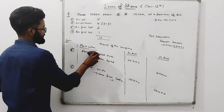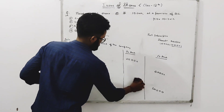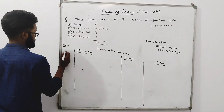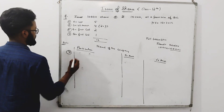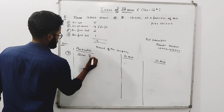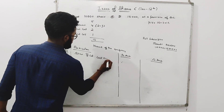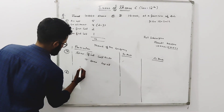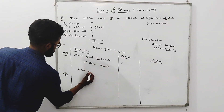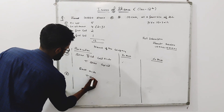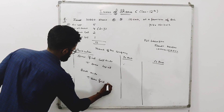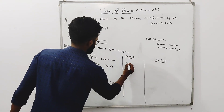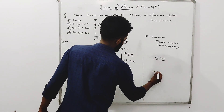Now we will do the final call — the last set of entries, the 7th and 8th entries. Share Final Call Account Debit to Share Capital. Then Bank Account Debit to Share Final Call. The amount is 10,000 into 1 equals Rs. 10,000 on both sides.